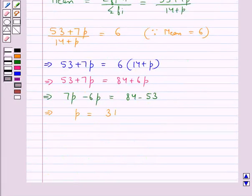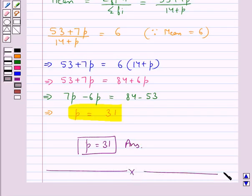We were supposed to find the value of p which is equal to 31. So our final answer is p equal to 31. This completes the session. Hope you have understood the solution for this question.